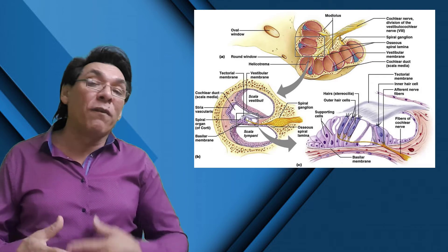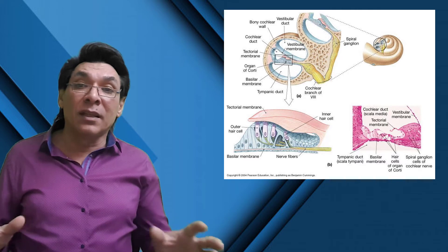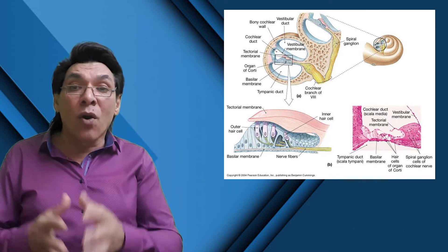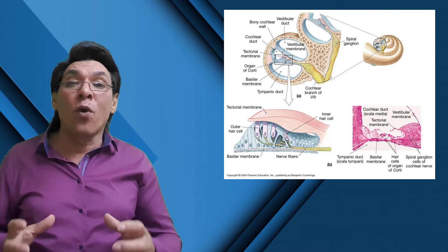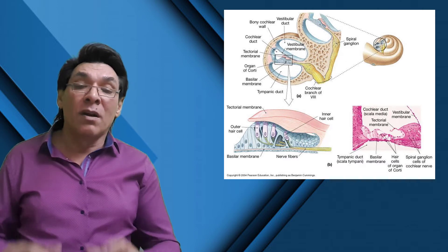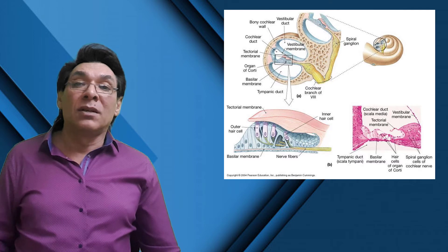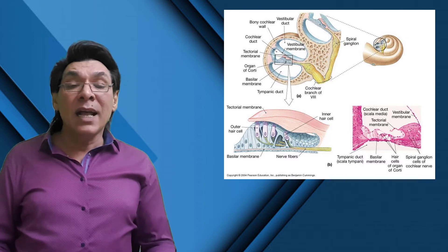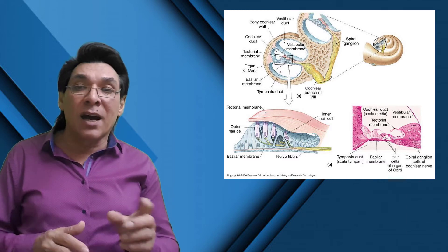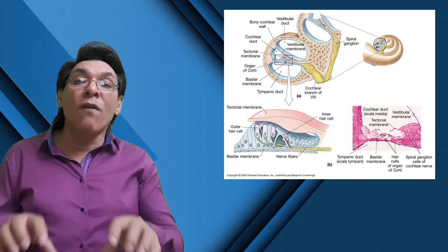The cochlear duct is a portion of the membranous labyrinth within the cochlea, filled with endolymph. The vestibular membrane forms the roof of the cochlear duct, and the basilar membrane forms the floor of the cochlear duct. The sense organ for hearing is located on the basilar membrane. In this slide you can see the cochlear duct, the basilar membrane as the floor of the cochlear duct, and the organ of Corti located there, along with the scala tympani.